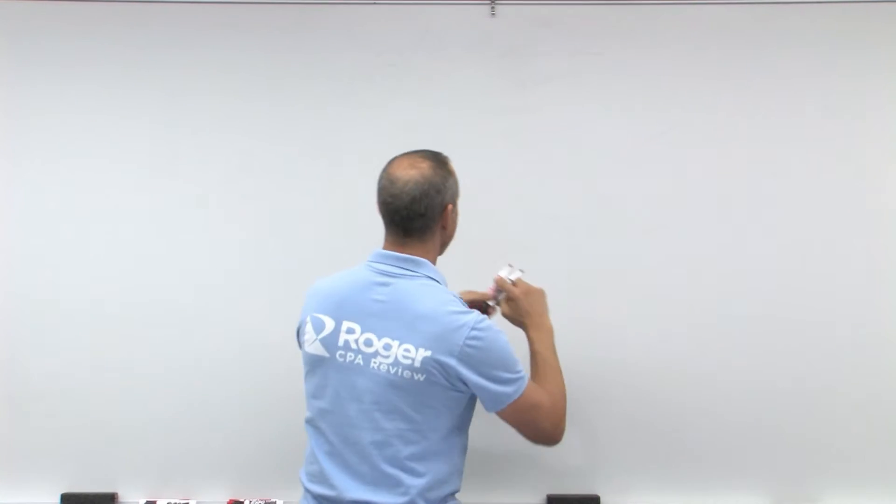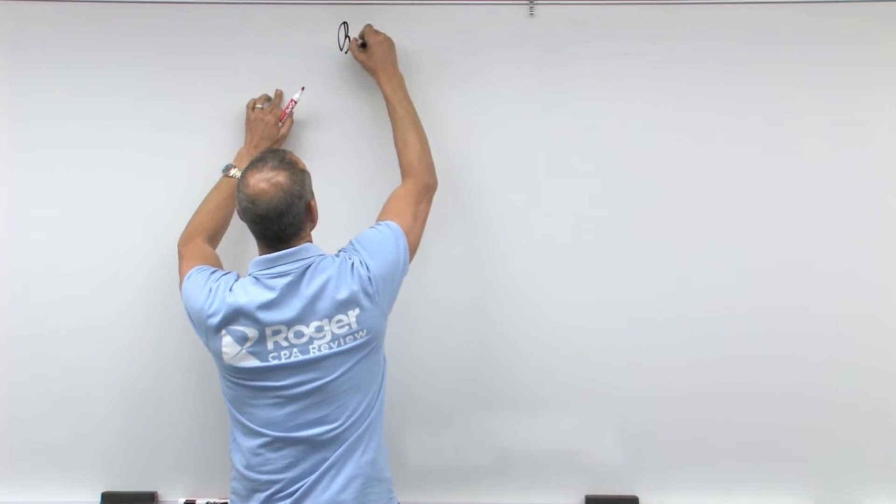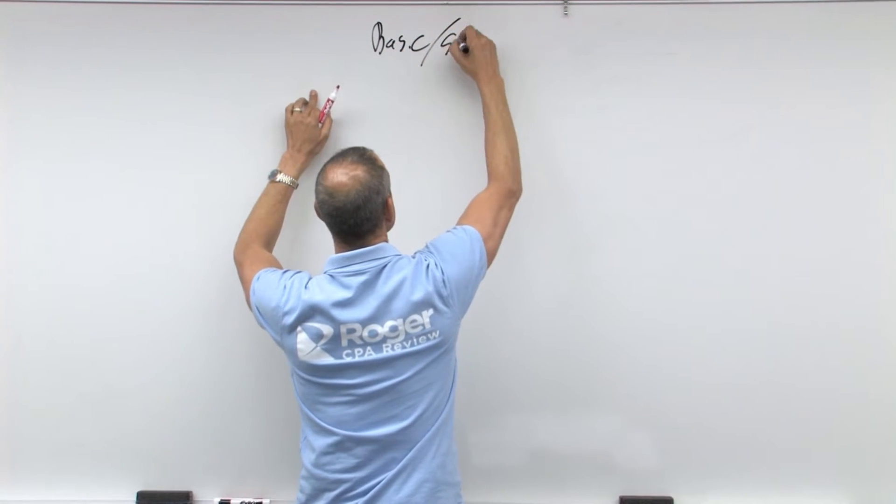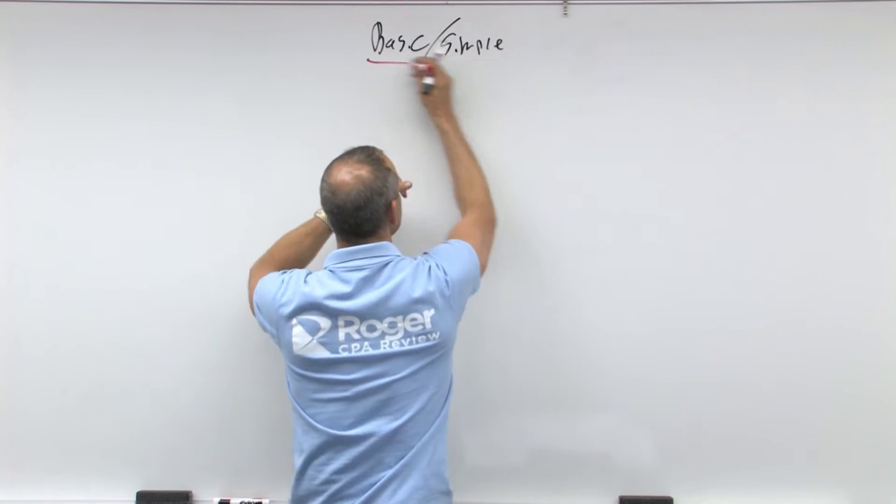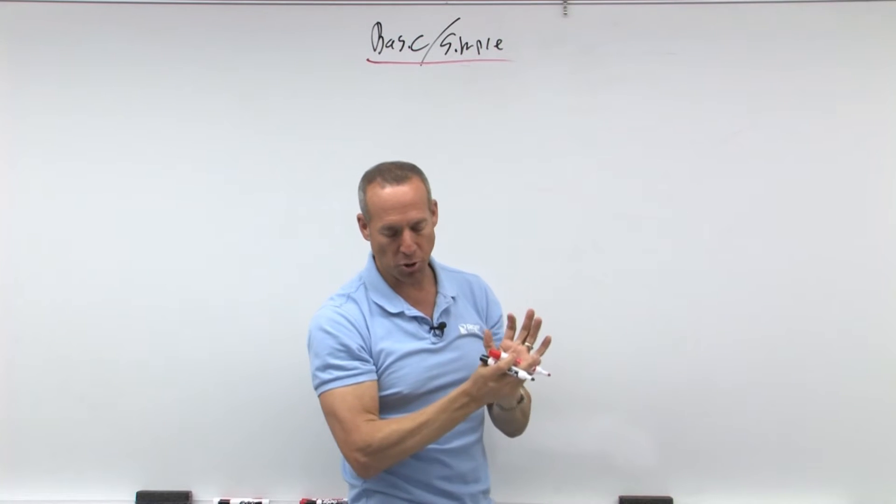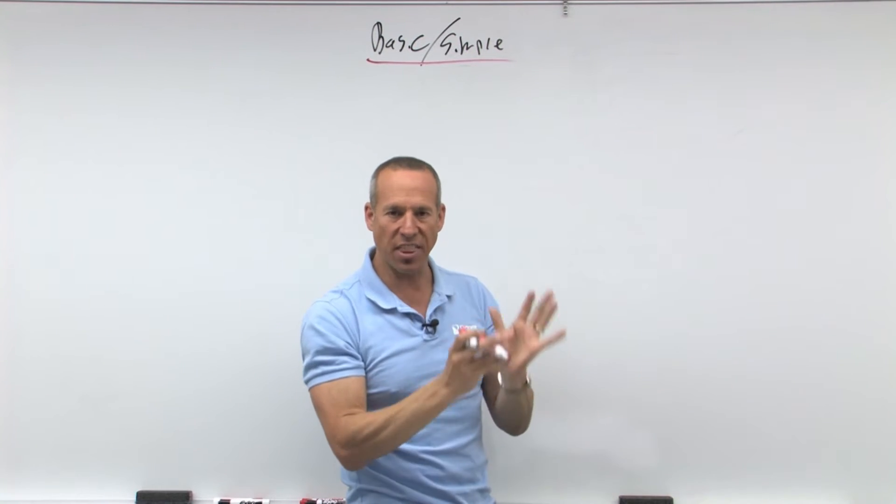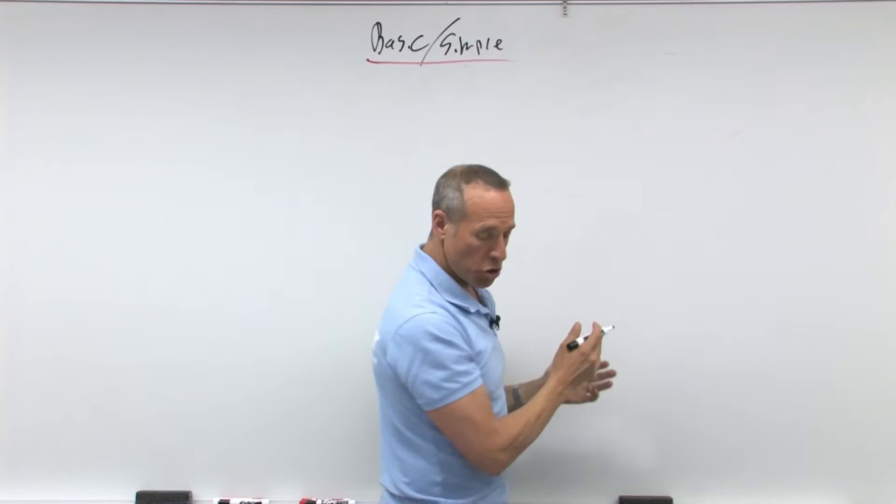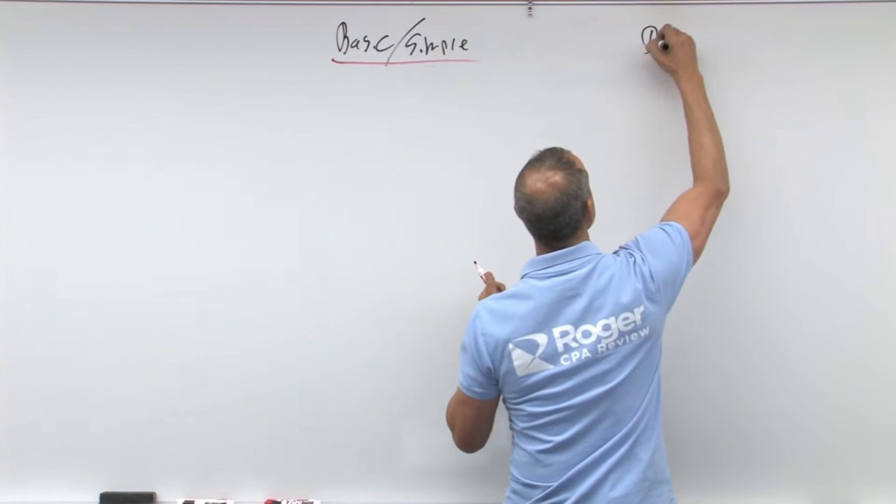So as we look at this, I'm going to start here with my basic earnings per share, which is simple, and that is your basic or simple earnings per share. That assumes there's nothing potentially dilutive.